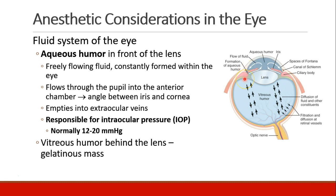It then empties into the extraocular veins. This is what they measure when they measure intraocular pressure, with that puff of air that they puff into your eye at the eye doctor. Usually, intraocular pressure is about 12 to 20 millimeters of mercury.